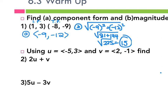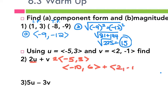Then number two says using U is negative five, three and V is two, negative one, find two U plus V. So the first thing I'm going to do is two U — I'm going to take two and multiply it in on U and I get negative ten and six. And then I'm going to add that to V, two, negative one. I add the first from each: negative ten and two is negative eight. Add the second from each: six and negative one, which is five.